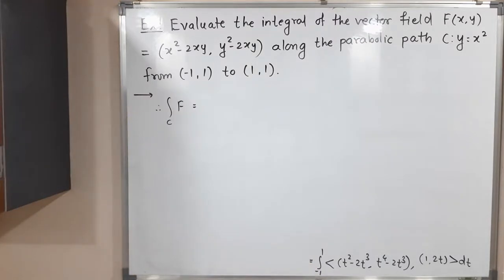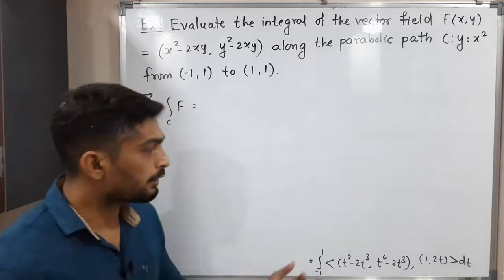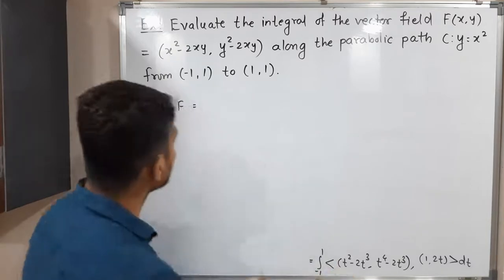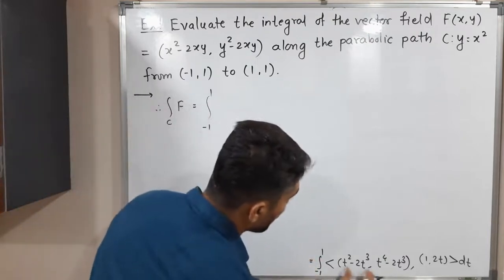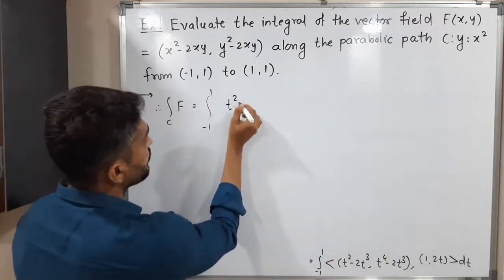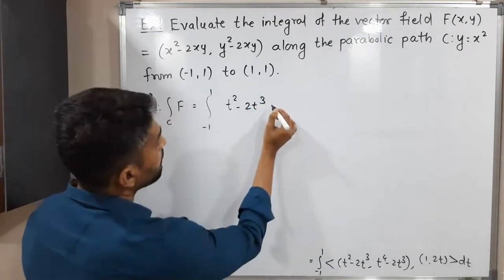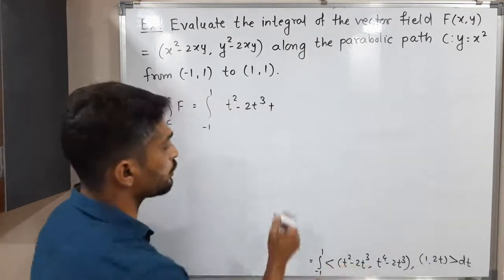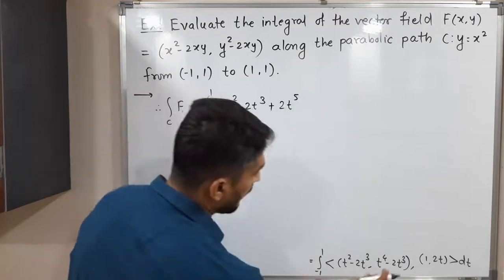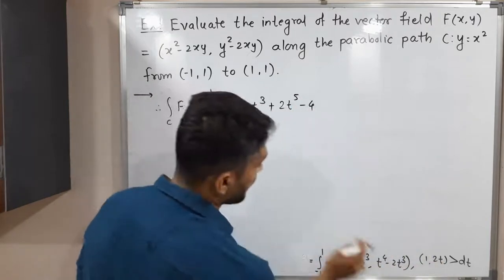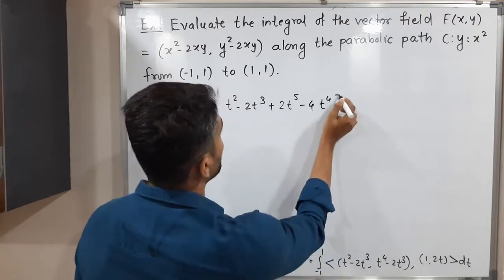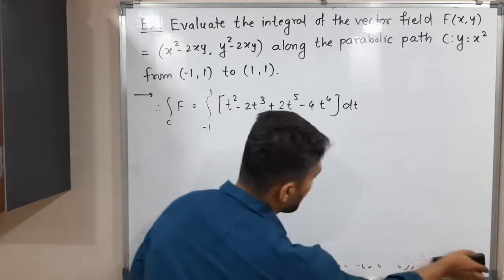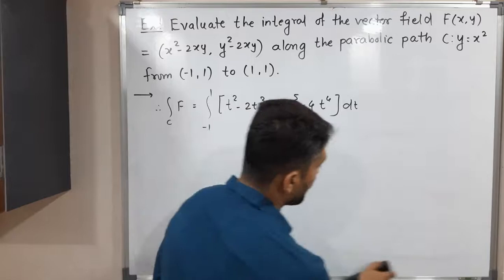Let us simplify further. The inner product is first component times first component plus second component times second component. So we have the integral from -1 to 1 of: first component times 1 gives t² - 2t³, plus second component times 2t gives 2t·(t⁴ - 2t³) = 2t⁵ - 4t⁴. Now we integrate with respect to t.